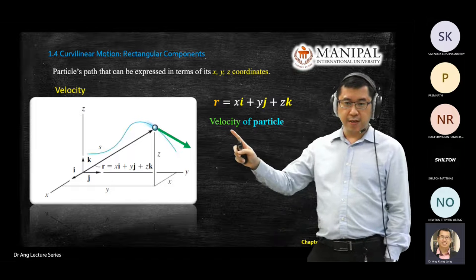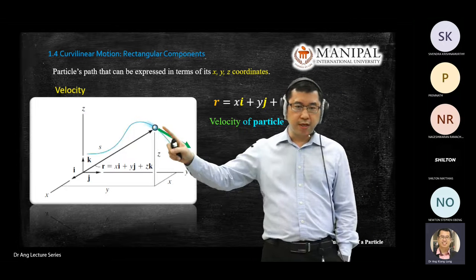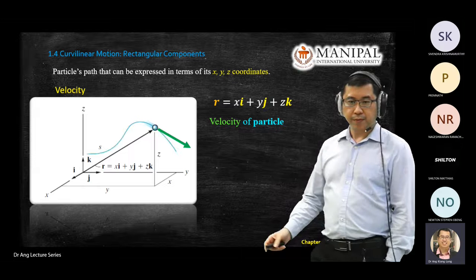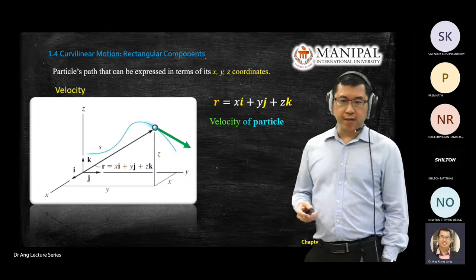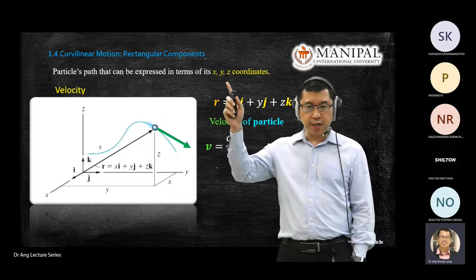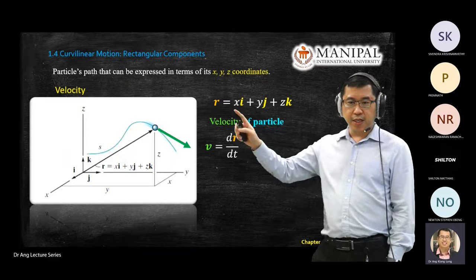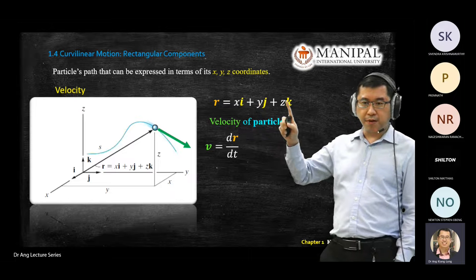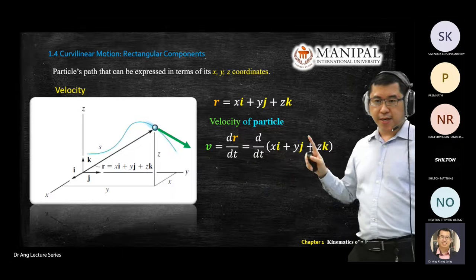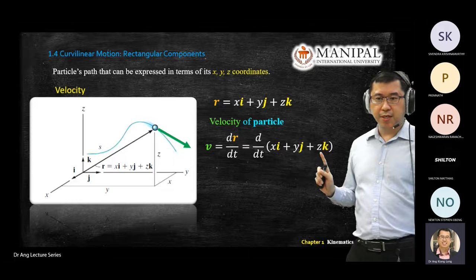When you want to draw a velocity arrow on a curve, it is always tangent to the curve. The equation for velocity: you take position divided by time. Since we are given coordinates, we use dr over dt, meaning each component — x, y, z — is divided by time. Mathematically, you write d over dt of the position vector xi plus yj plus zk.